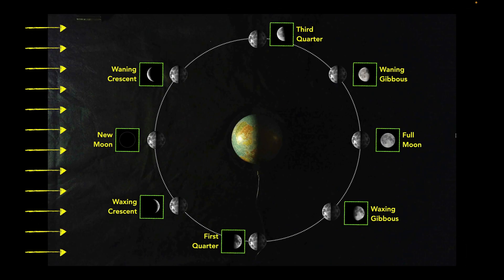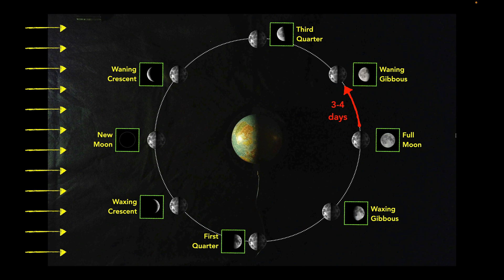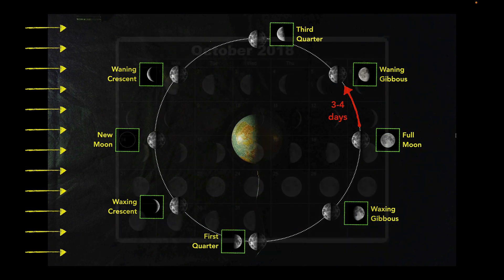Let's talk about the timing. In real time, one complete cycle of Moon phases takes 29 days. So from a full Moon to the next full Moon, or from a waning crescent to the next waning crescent, there are 29 days between a phase and the next time you return to that same Moon phase. That means between the eight phases shown in our diagram, there are about three or four days between each image.